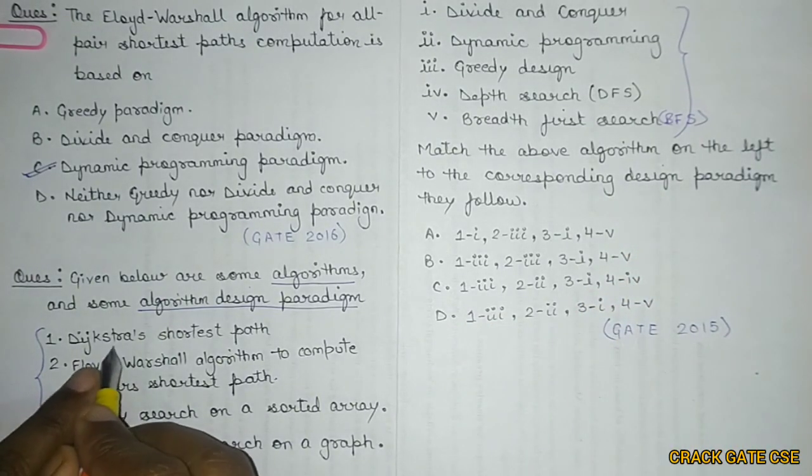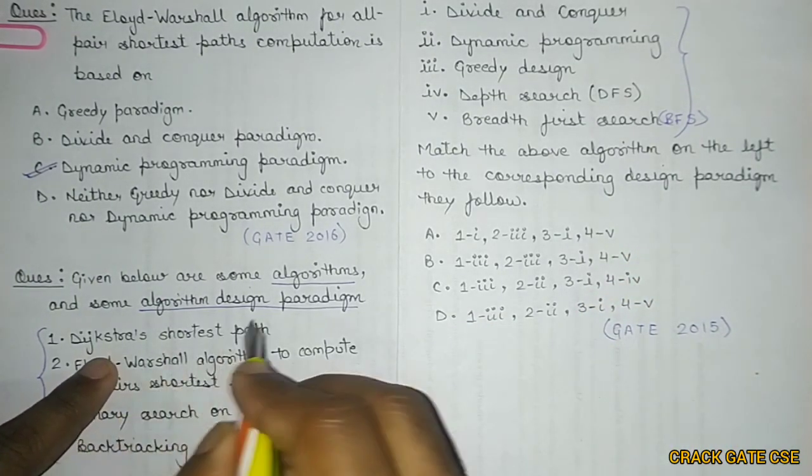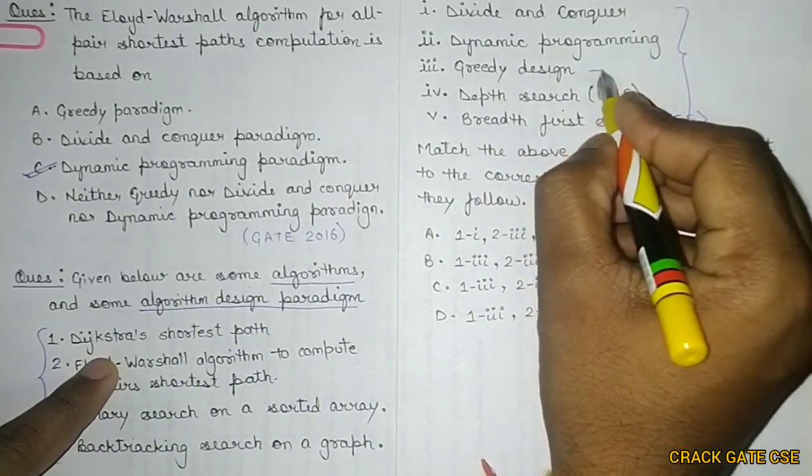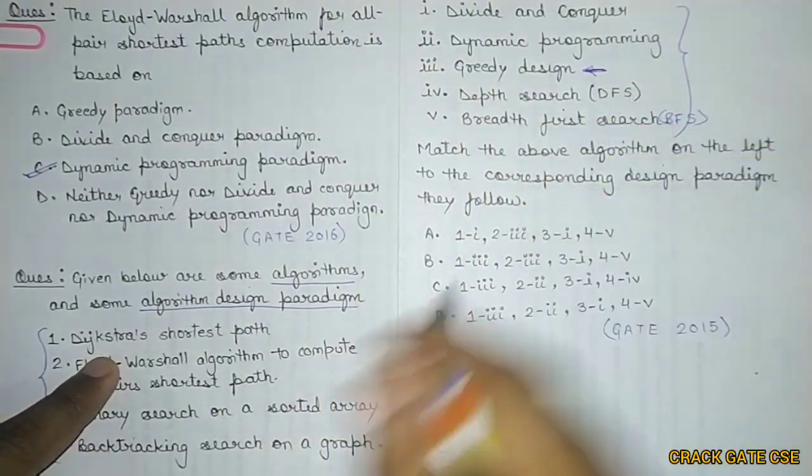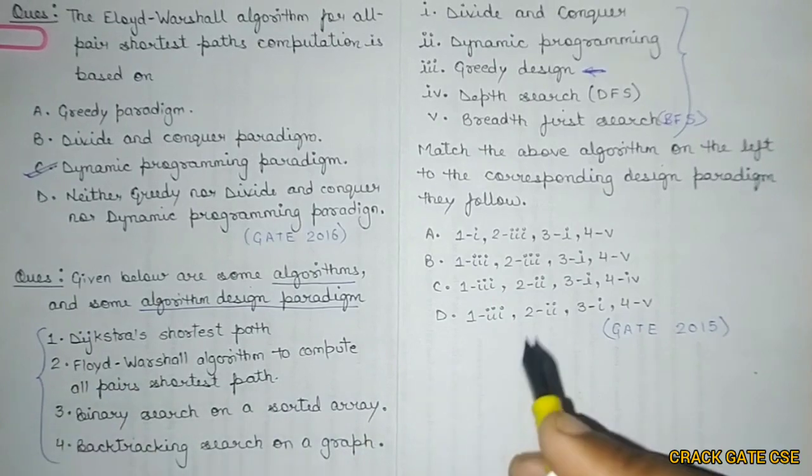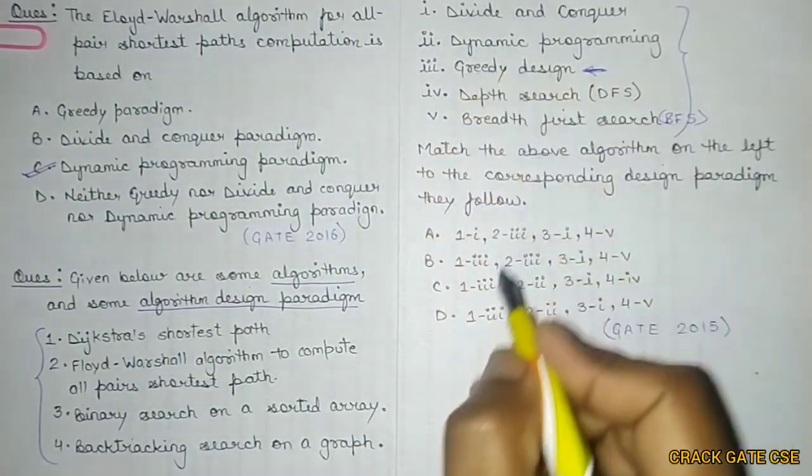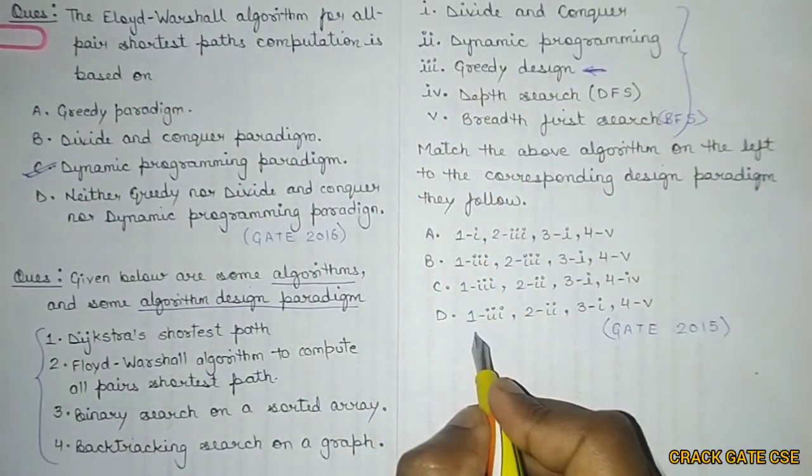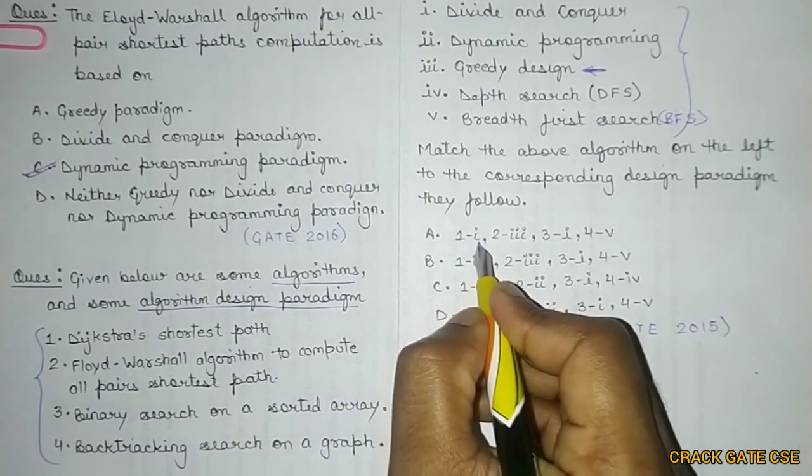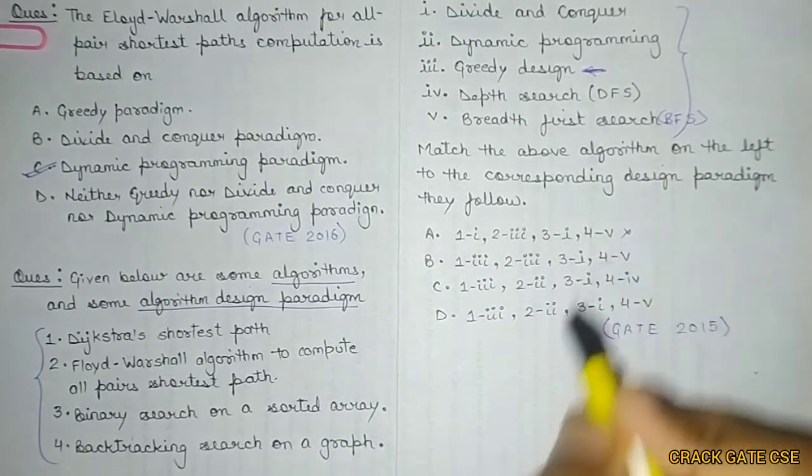Check first: Dijkstra's shortest path. We know that Dijkstra is the greedy design approach. So first one is third (greedy). These three options have first with third, but this one does not have first with third, so this is not an answer.